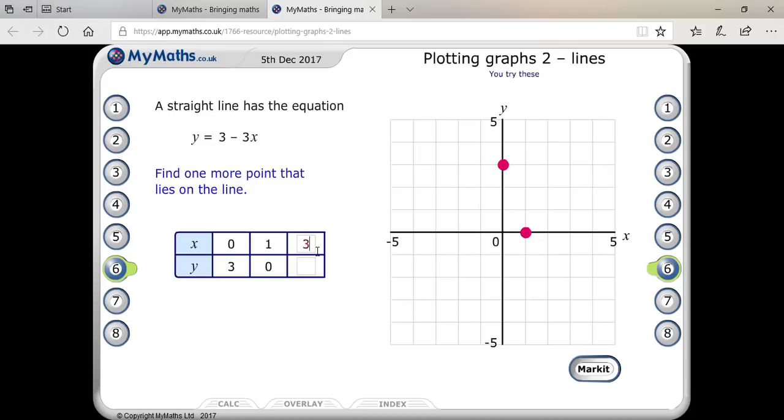Suppose x equals 3... so 3 times 3 is 9... no, you can't plug in x equals 3. You can plug in 2. So 3 times 2 is 6, 3 minus 6 you will get minus 3.